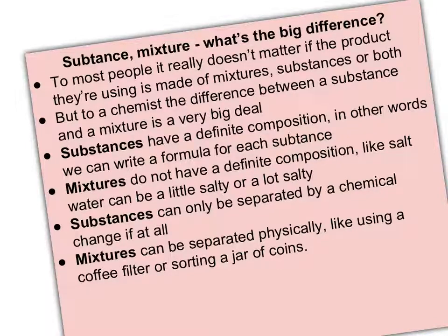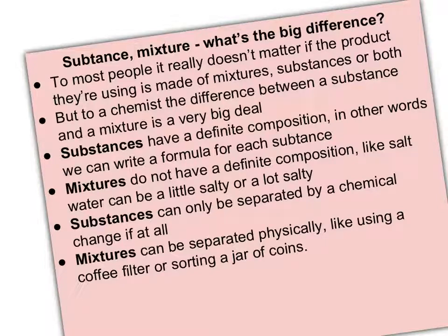Substances have what we call a definite or defined composition. In other words, we can write a formula for any substance. Like water — most people know the formula for water is H2O. That means water always has two hydrogen chemically bonded to one oxygen. Not three hydrogen, not one hydrogen, not two oxygen, but two hydrogen, one oxygen. H2O is water. That's a substance — a definite composition, always the same.